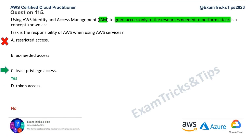The other options — restricted access, as-needed access, and token access — are all incorrect. The correct answer for question 115 is Option C, least privileged access, which ensures you are managing AWS resources responsibly.